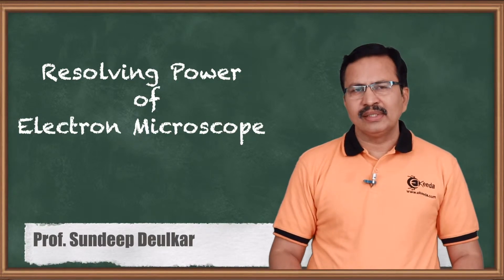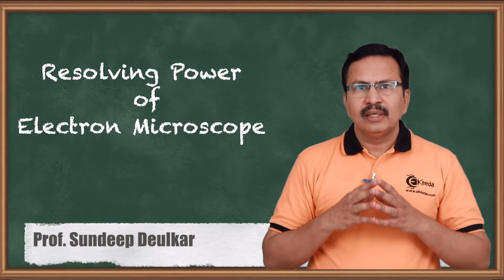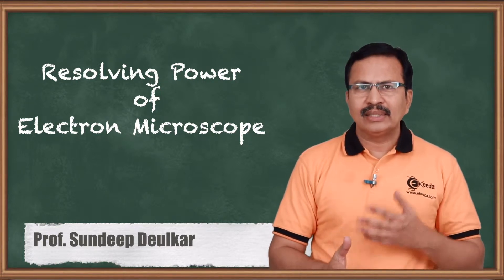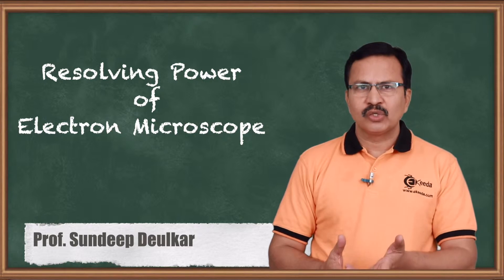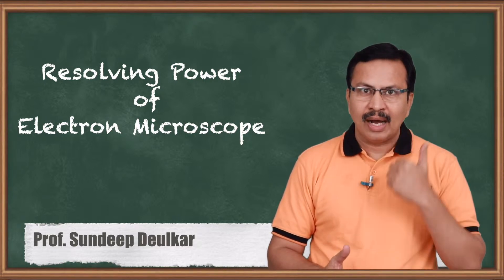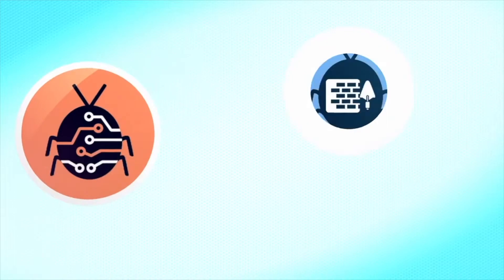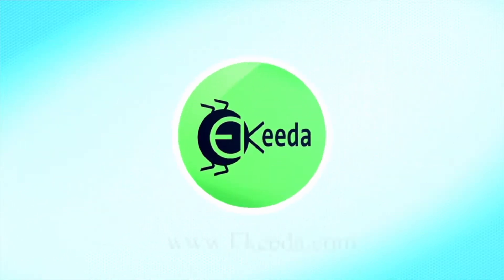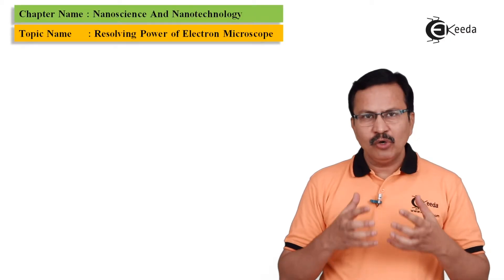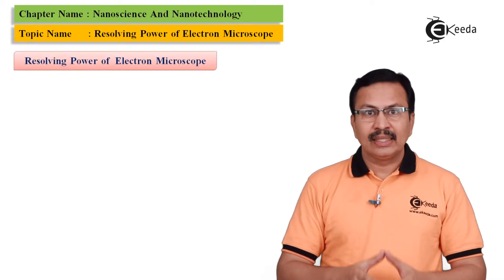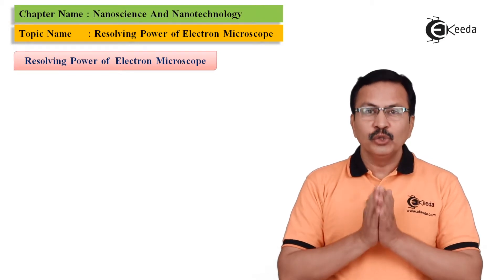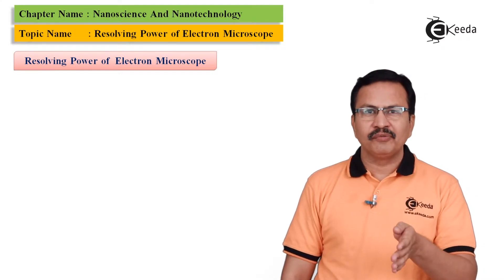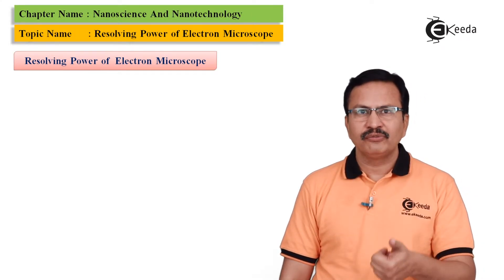Hello friends, we have seen that an electron microscope has a much better resolving power than that of an optical microscope or as compared to that of an eye. We have also studied the fact that this is due to the use of electrons in electron microscope and the use of electromagnetic waves in the case of optical microscope.